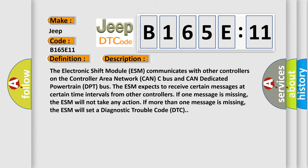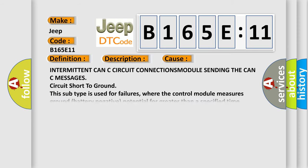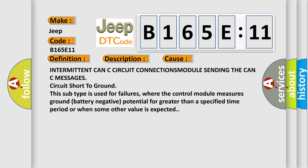This diagnostic error occurs most often in these cases: Intermittent CAN-C circuit connections module sending the CAN-C messages circuit short to ground. This subtype is used for failures where the control module measures ground battery negative potential for greater than a specified time period or when some other value is expected.